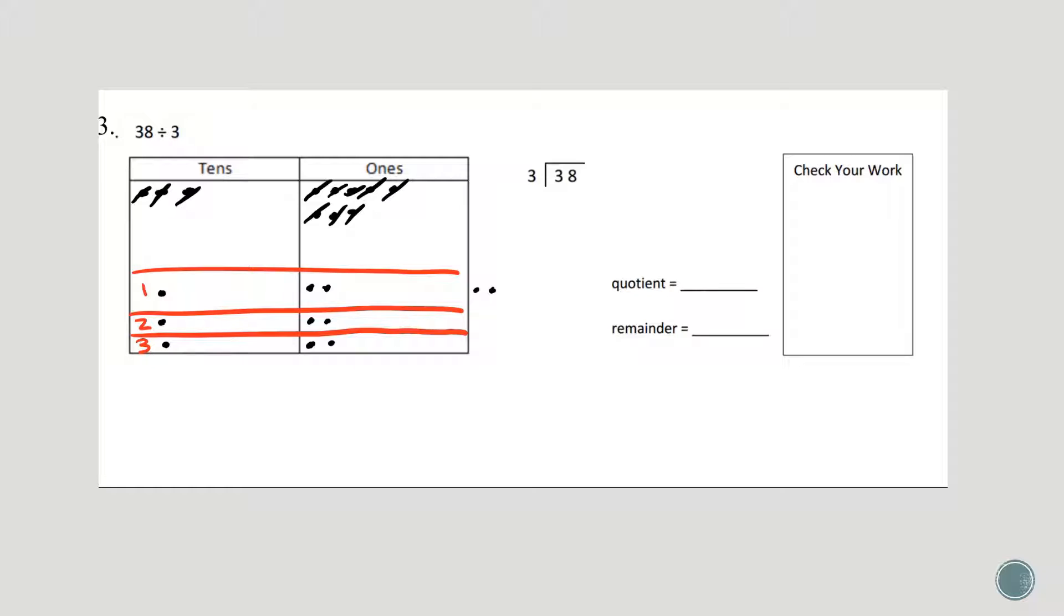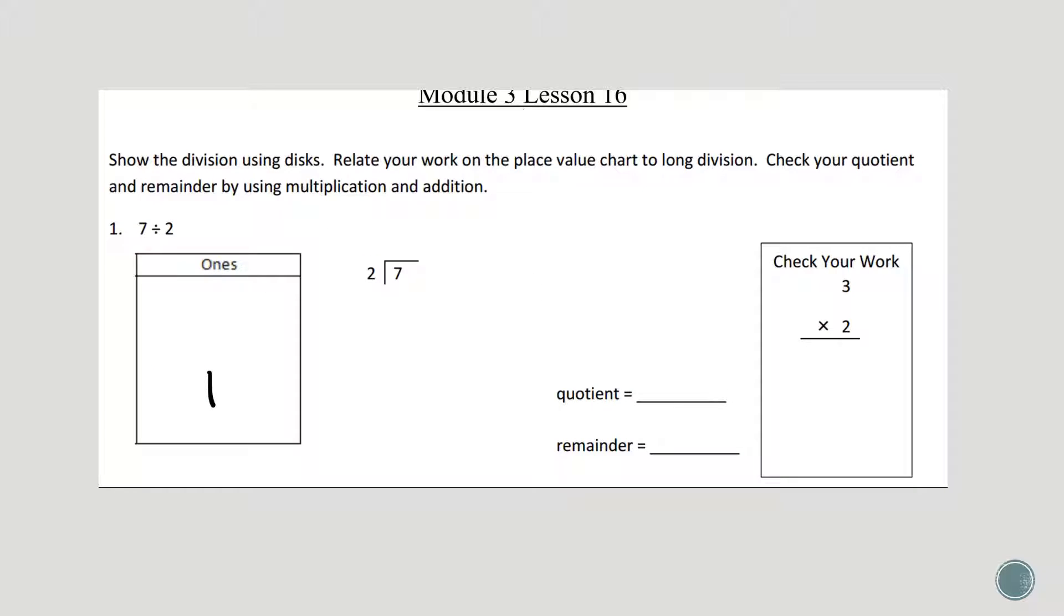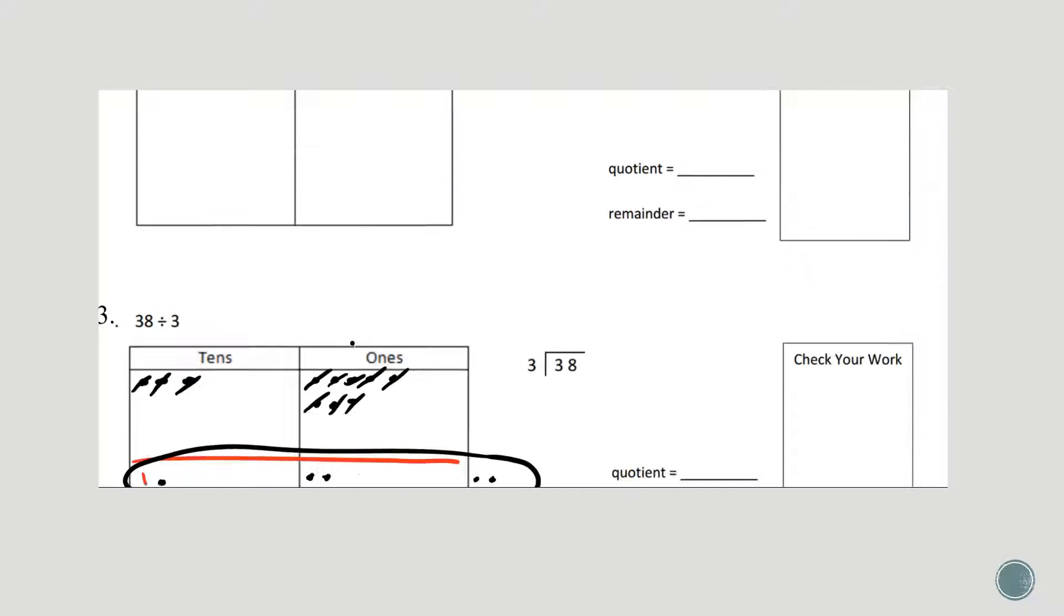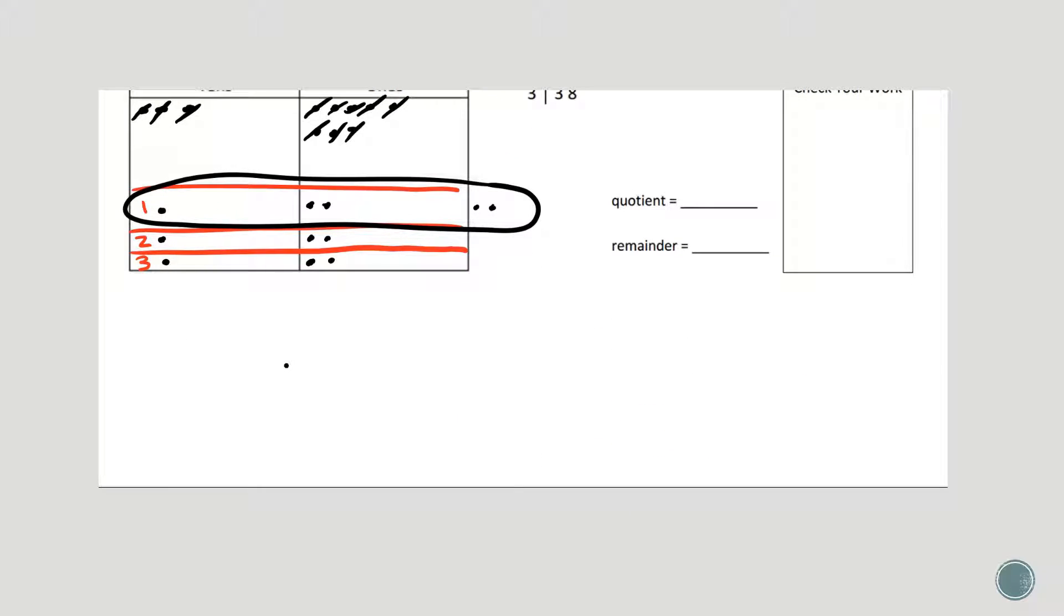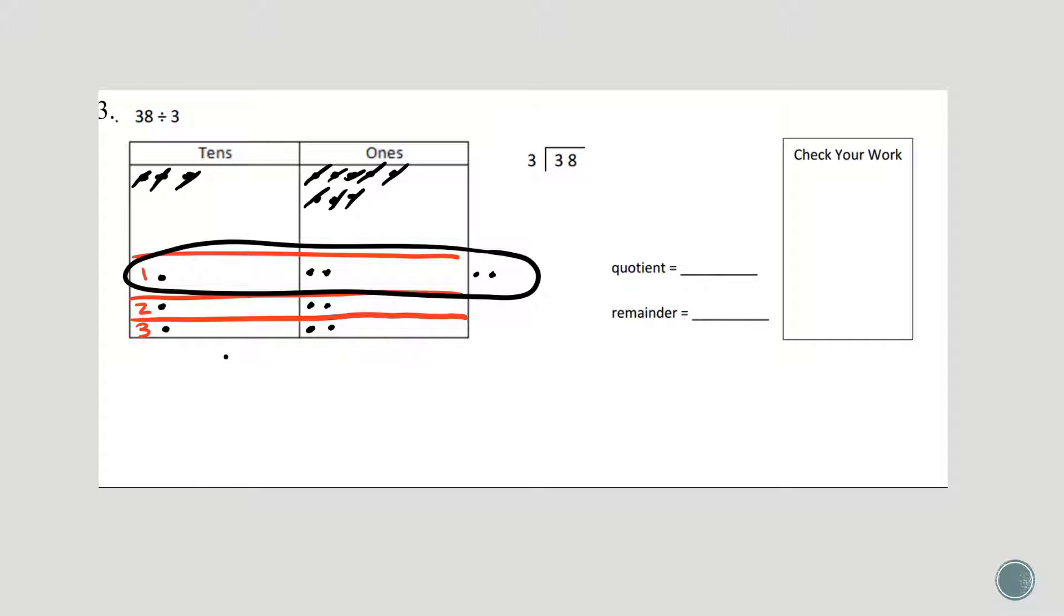So now that I've used all my number disks, I can circle that group and count up what I have. I have 1 in the tens, 2 in the ones, so I have 12 with the remainder of 2, and I have to put that up by the answer. 12 remainder 2.